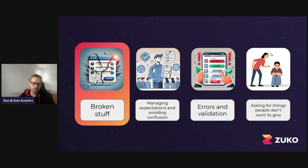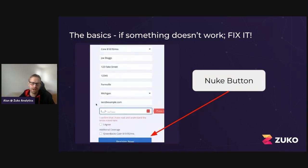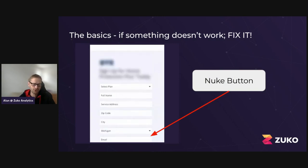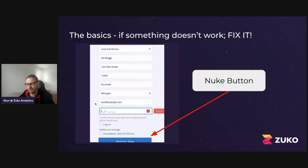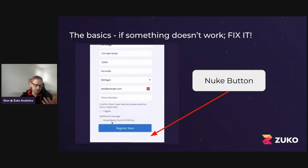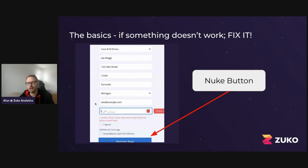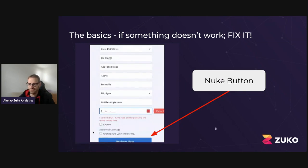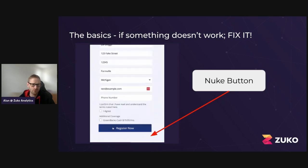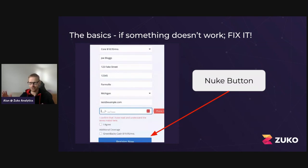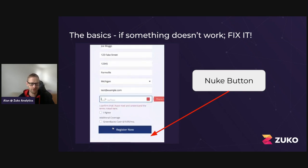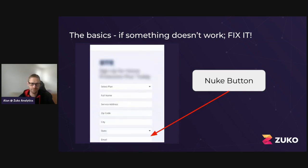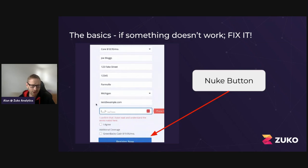Looking at the first one: broken stuff. These are things that just don't work the way they should. If something isn't working, you should be able to identify it pretty quickly and get your development team to fix it. This could be elements that just don't work — buttons that do nothing and go nowhere is a classic example. We've got one on the screen here: when you click the 'Register Now' button, if you haven't got the form filled out perfectly, it wipes all the data from the form so you've got to start again, rather than just flagging the phone number and terms and conditions that were missing. Obviously if you have something like this, it's going to be costing you business.